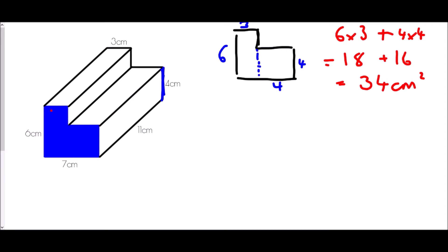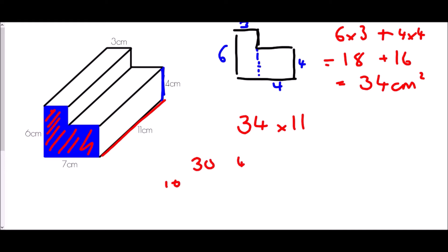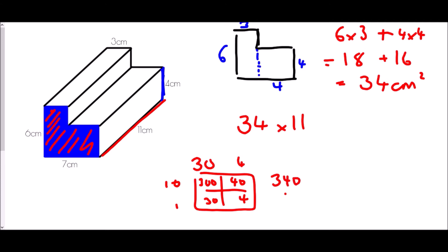Now that is the area of the cross section. But to get the volume I'm going to need to multiply it by its length. So I'm going to have 34 multiplied by 11. Using a grid: 300, 40, 30, and 4. Adding all of those together: 340 plus 34 gives me 374 centimetres cubed. We found the volume of that shape.